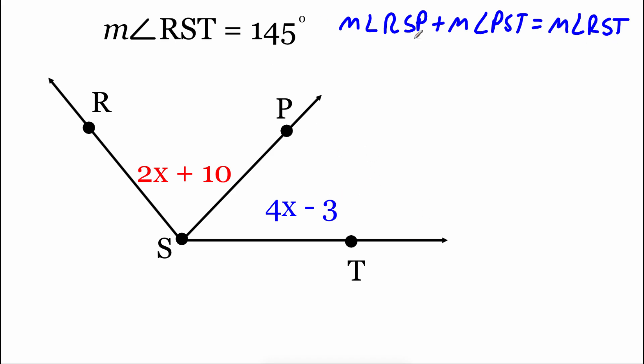So what I'm going to do up here is just start plugging in the information we have. So for the measure of angle RSP, that's this 2x plus 10. For the measure of angle PST, that's the 4x minus 3. And we've got addition happening between those, and that's got to equal the measure of our big angle RST, which we're told is 145 degrees. So there's our angle addition postulate set up with some actual things plugged in there.